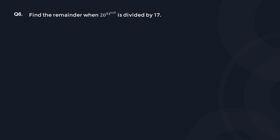Question number 6 is a number theory based question and in my opinion this is slightly difficult. Ideally you should have left it in the exam, but if you have done it, that is fine. Let us go ahead and see what is the right way of approach. Here we have 20 to the power of 51 to the power of 113, and you are dividing it by 17.